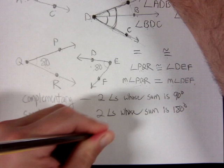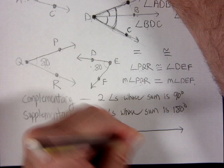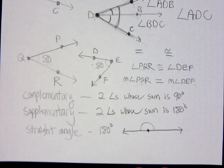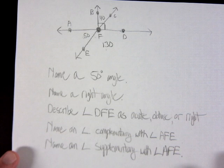A straight angle is an angle whose degree measure is 180 degrees. When you draw it out, a straight angle just looks like a straight line — that's all it is: 180 degrees.